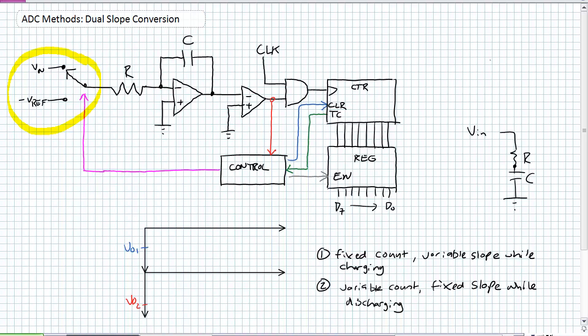At a certain time, the control is going to tell it to switch — perhaps a time where it samples that input voltage, at which point something might be charging up — hint, hint — then switch it over and at some point something might discharge — hint, hint — to that negative reference voltage. It's going to flip-flop back and forth between them and measure the time, hence the use of a counter.